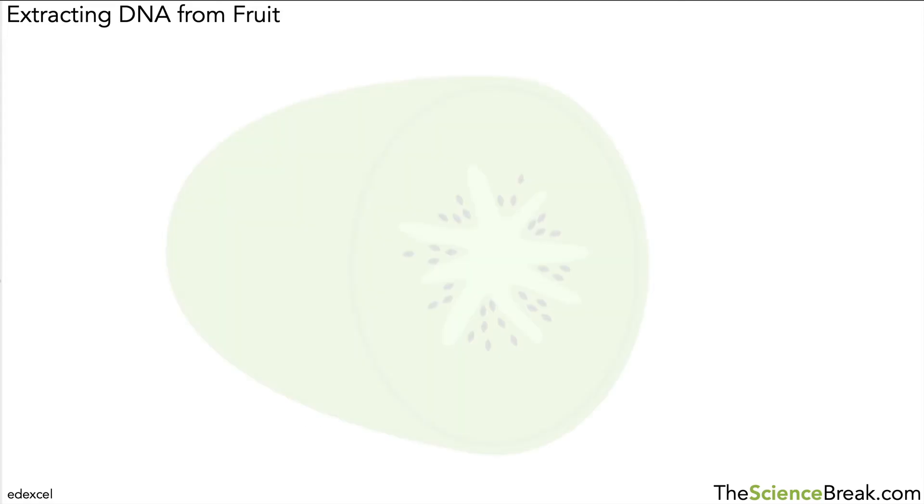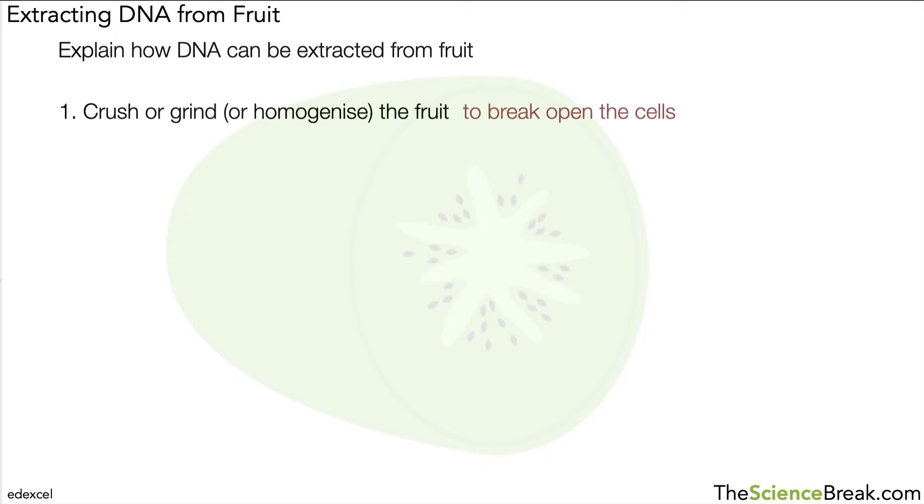Let's summarize all of the above. This could very well be a six-mark question: Explain how DNA can be extracted from fruit. First thing is to crush or grind it—we could use the word homogenize. That's to break open the cells.